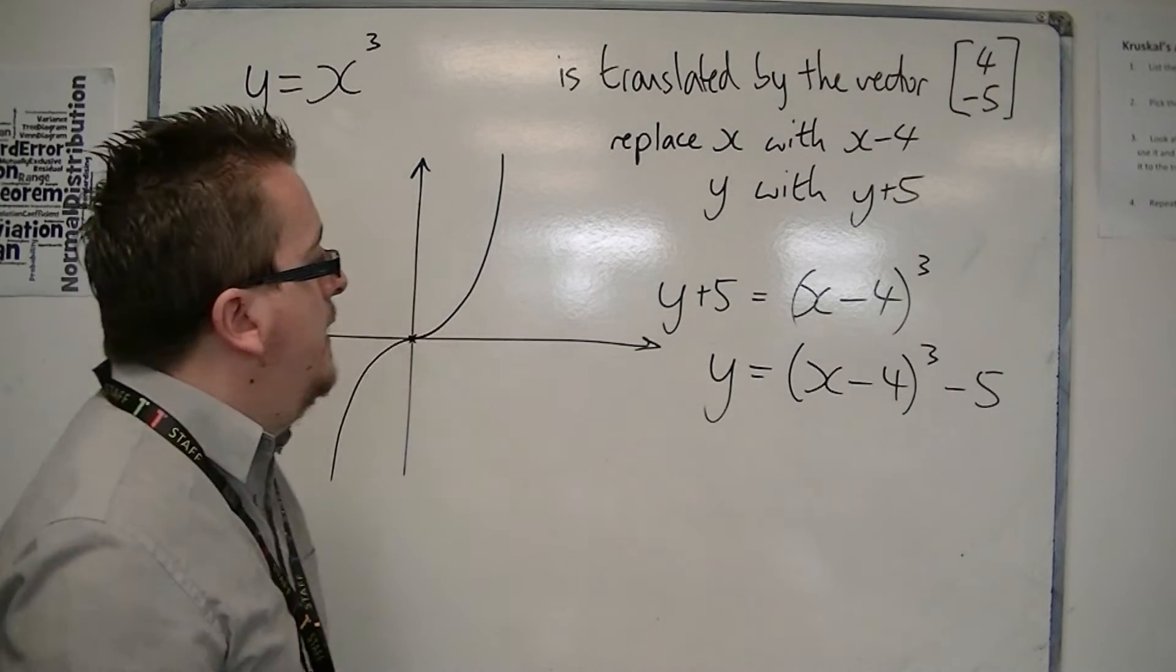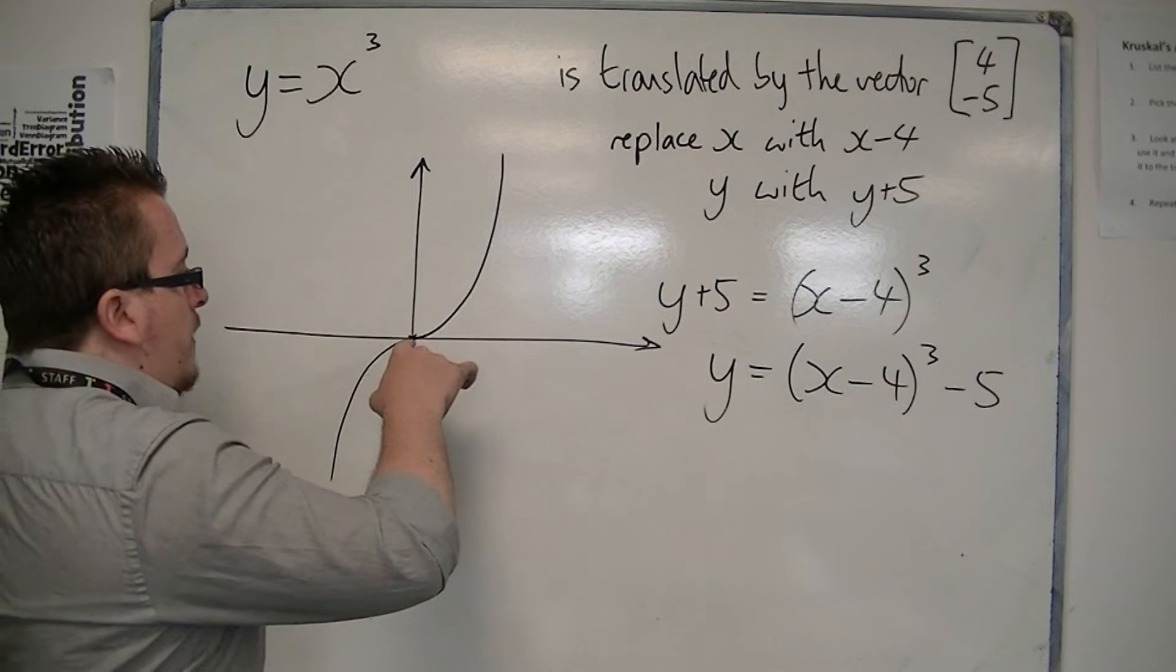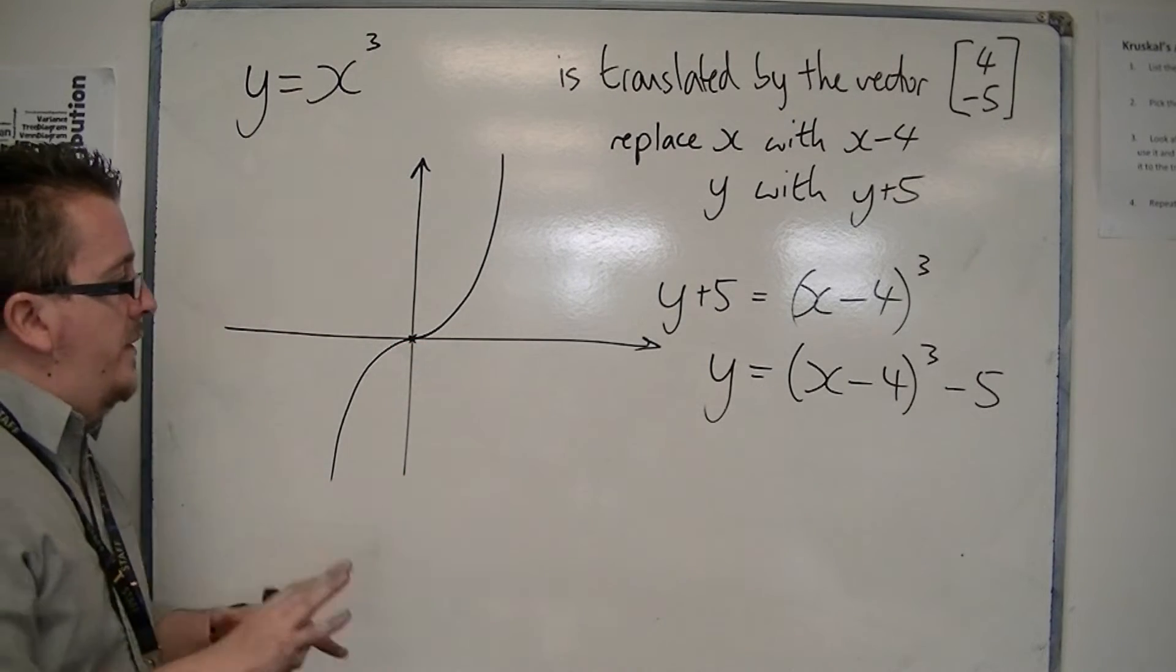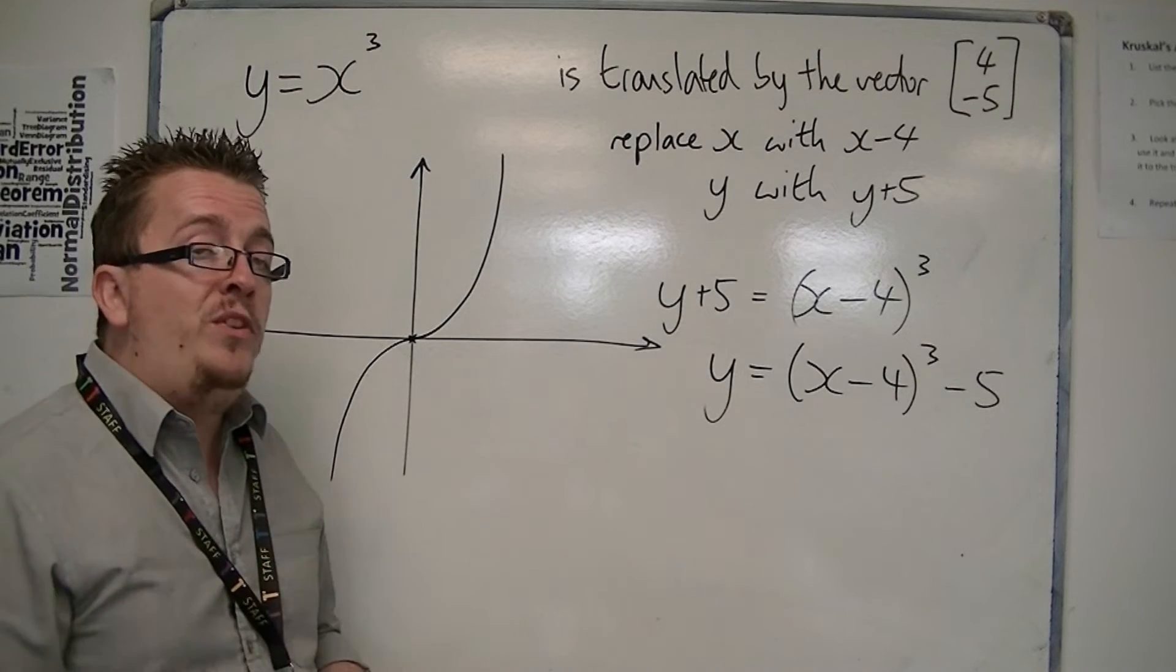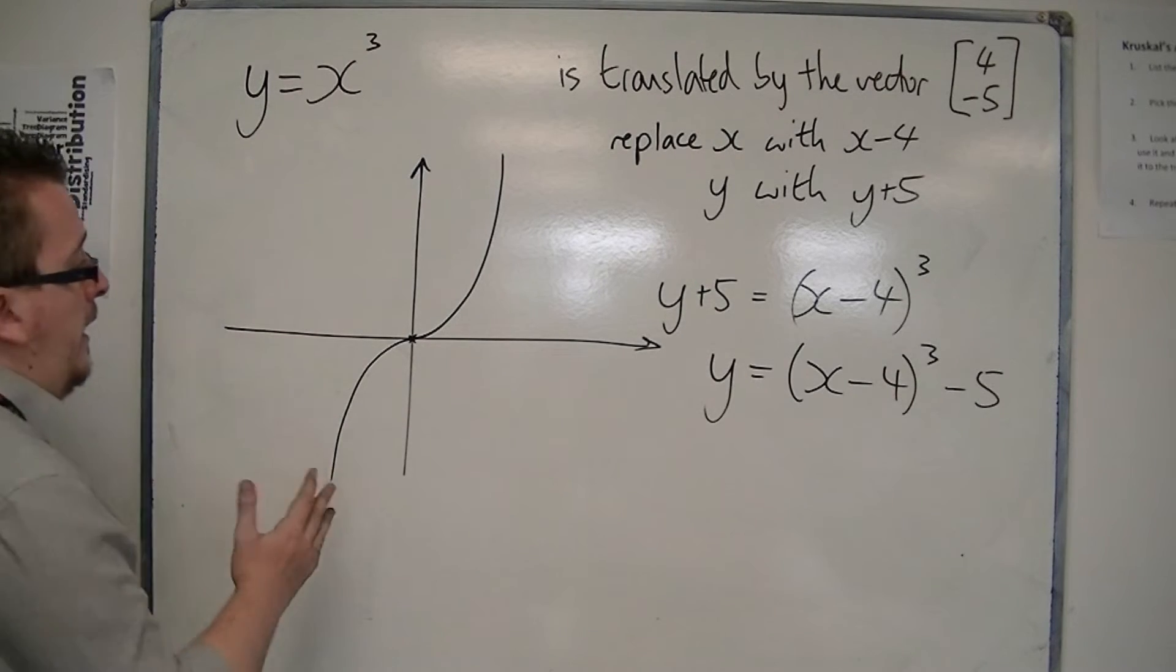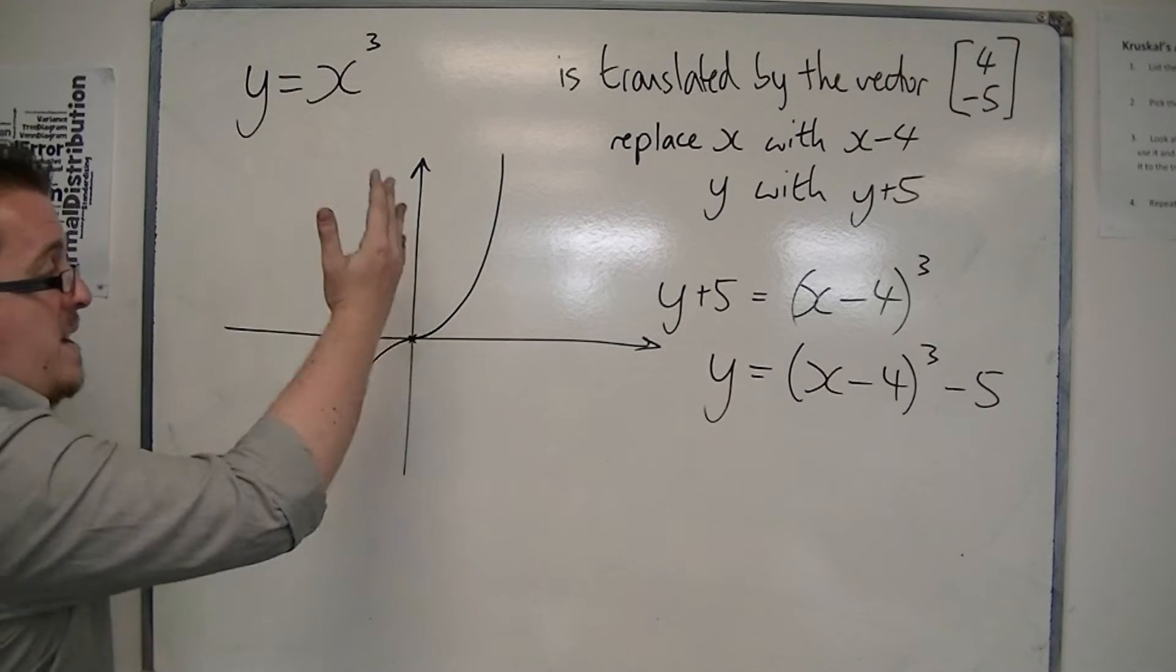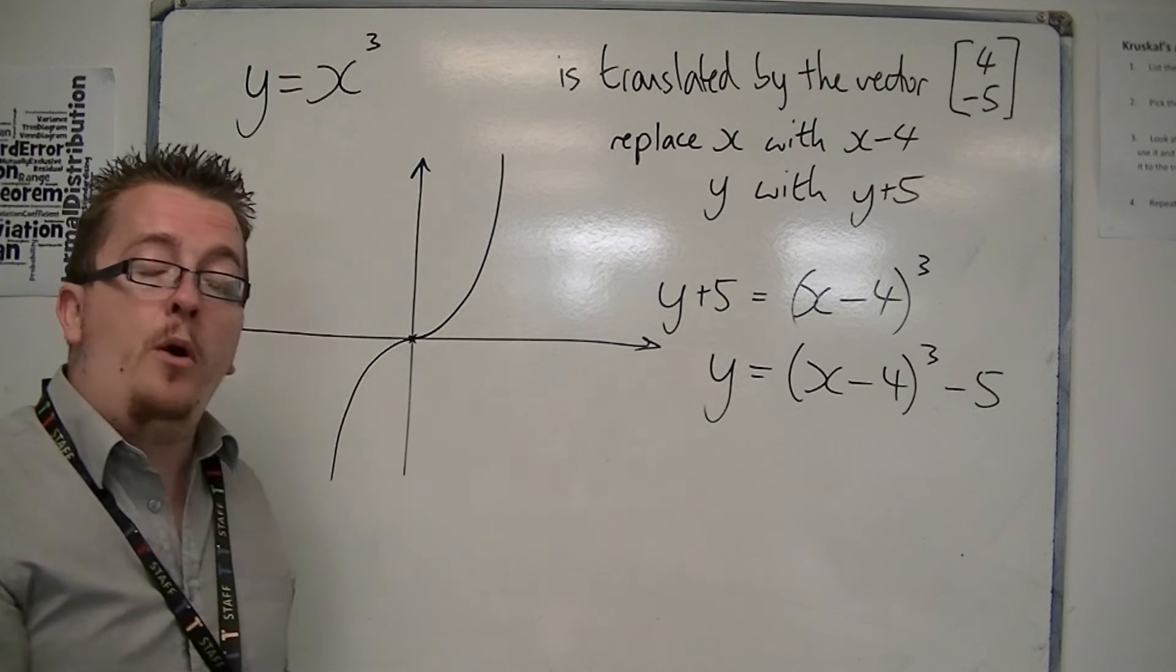You wouldn't call this completed square form, but it looks very similar to it. And you could interpret it in the same way, that this point, this turning point, or what is also known as a point of inflection, because it's not a minimum point, it's not a maximum point.